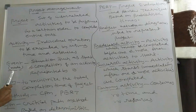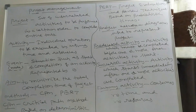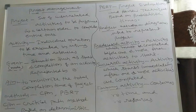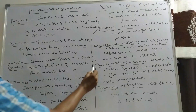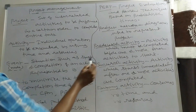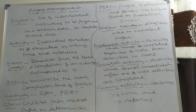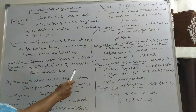Next: Event, or node. An event is a situation such as the start or completion of an activity in the project. So an event is a situation where an activity starts or where an activity finishes. In the project diagram, we represent this event or node by a small circle.